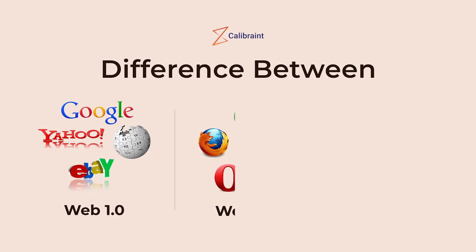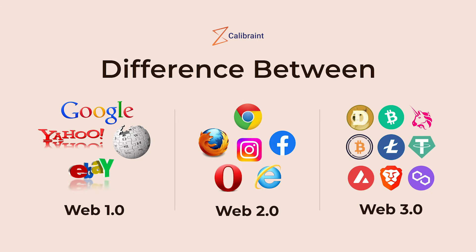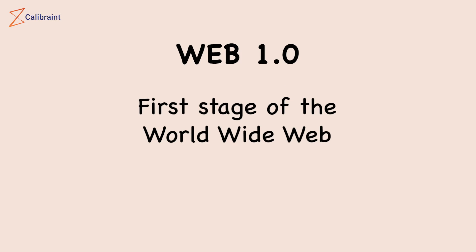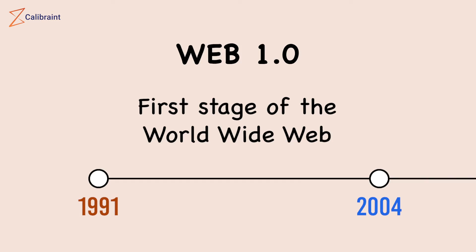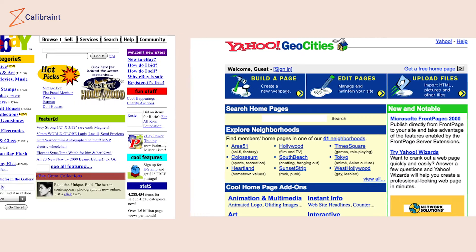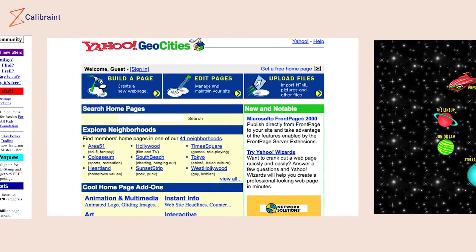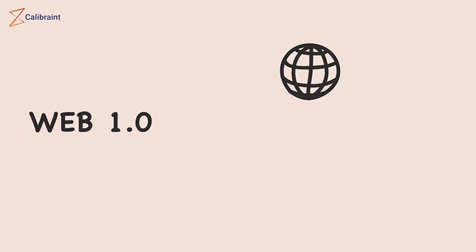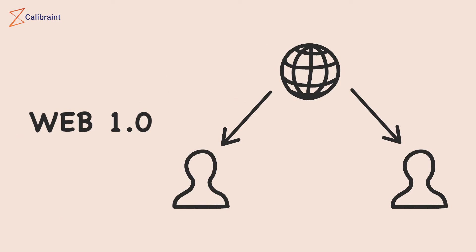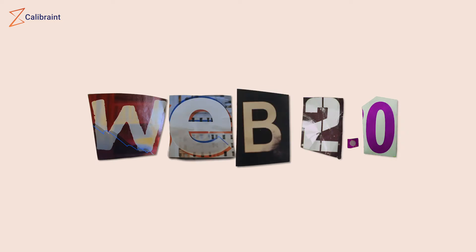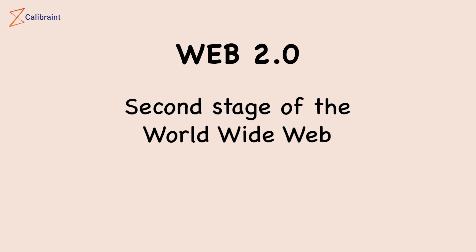Web 1.0 refers to the first stage of the worldwide web evolution, from 1991 to 2004. It consisted of static pages which were served from the server's file system and did not change based on user input or interaction. Web 1.0 was a content delivery network which enabled the showcase of information on websites and could also be used as a personal website.